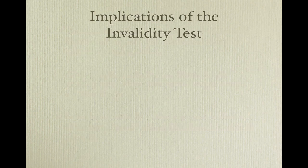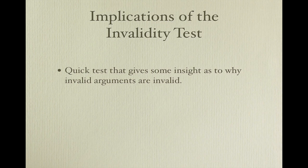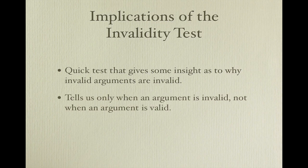The implications for invalidity: the test for invalidity is a quick device that we apply to natural language arguments, and in our case that natural language is English. One of the great advantages of the test is that it gives us some insight into why invalid arguments are invalid. But there are limitations. First, it only tells us when an argument is invalid, not when an argument is valid. If you can't think up a possible situation where the premises are true and the conclusion false, you might assume that the argument is valid — but you're in a bad spot. Is it really that the argument is valid, or is it that the argument is invalid but you just can't come up with a situation that proves its invalidity? Second, the test for invalidity doesn't help us construct valid arguments. It only helps us spot invalid ones.